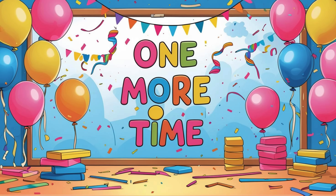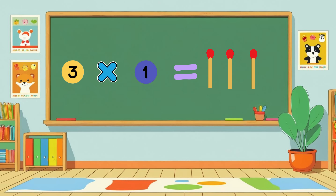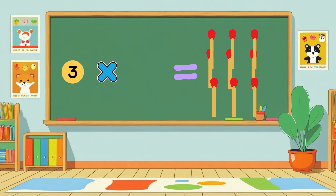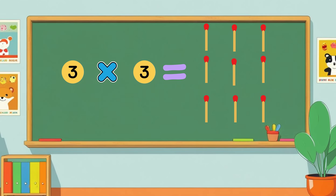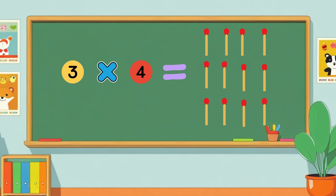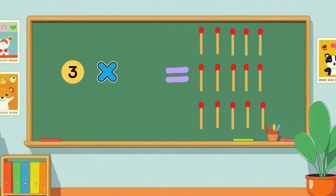Let's sing it again. Three times one is three. Three times two is six. Three times three is nine. Three times four is twelve. Three times five is fifteen. Three times six is eighteen.